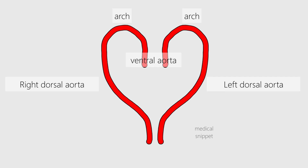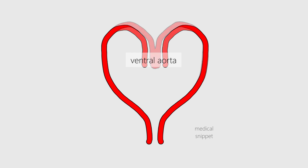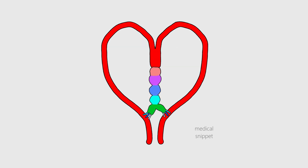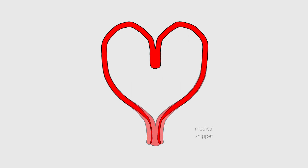As the embryo develops, the ventral aorta fuses to form the aortic sac. The aortic sac has right and left horns, from which the aortic arches arise. The aortic sac lies superior to the truncus arteriosus of the heart tube. The dorsal aortae, caudal to the aortic arches, fuse to form a single vessel — the future descending thoracic aorta.